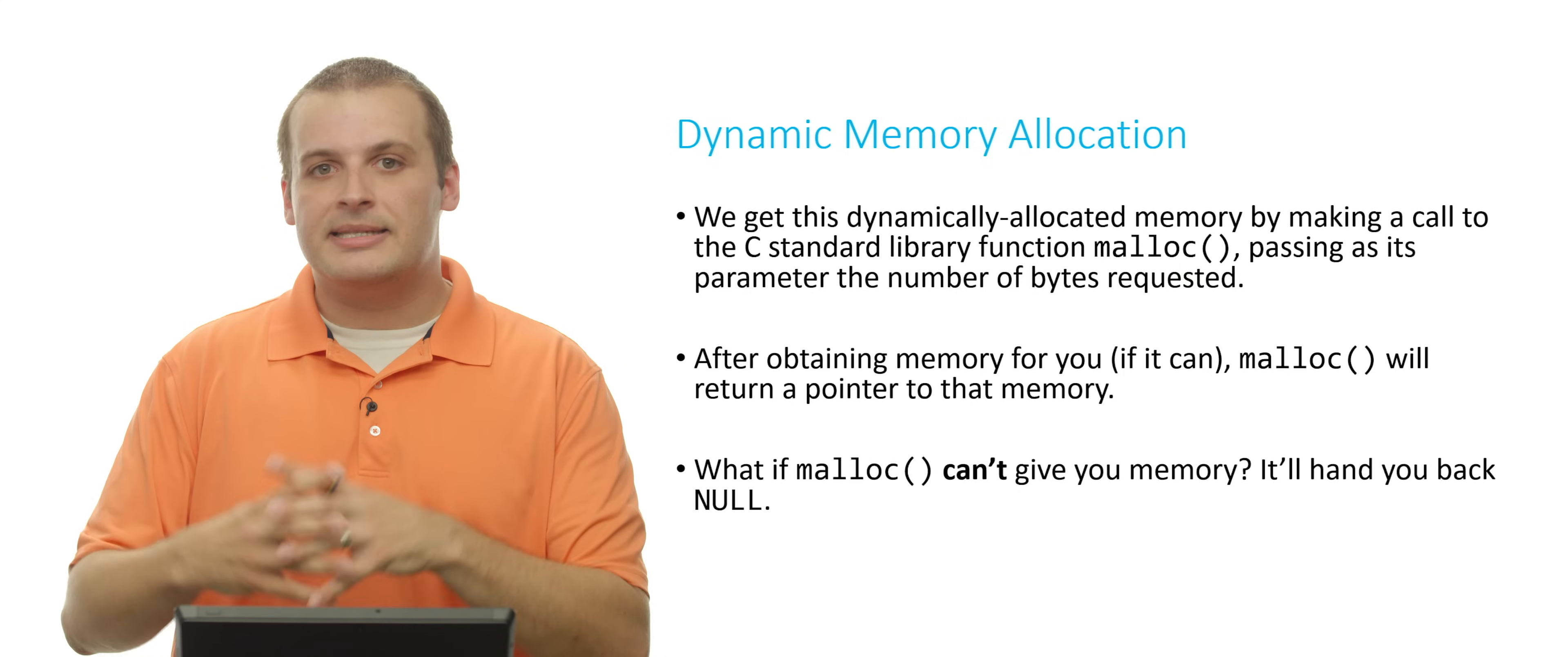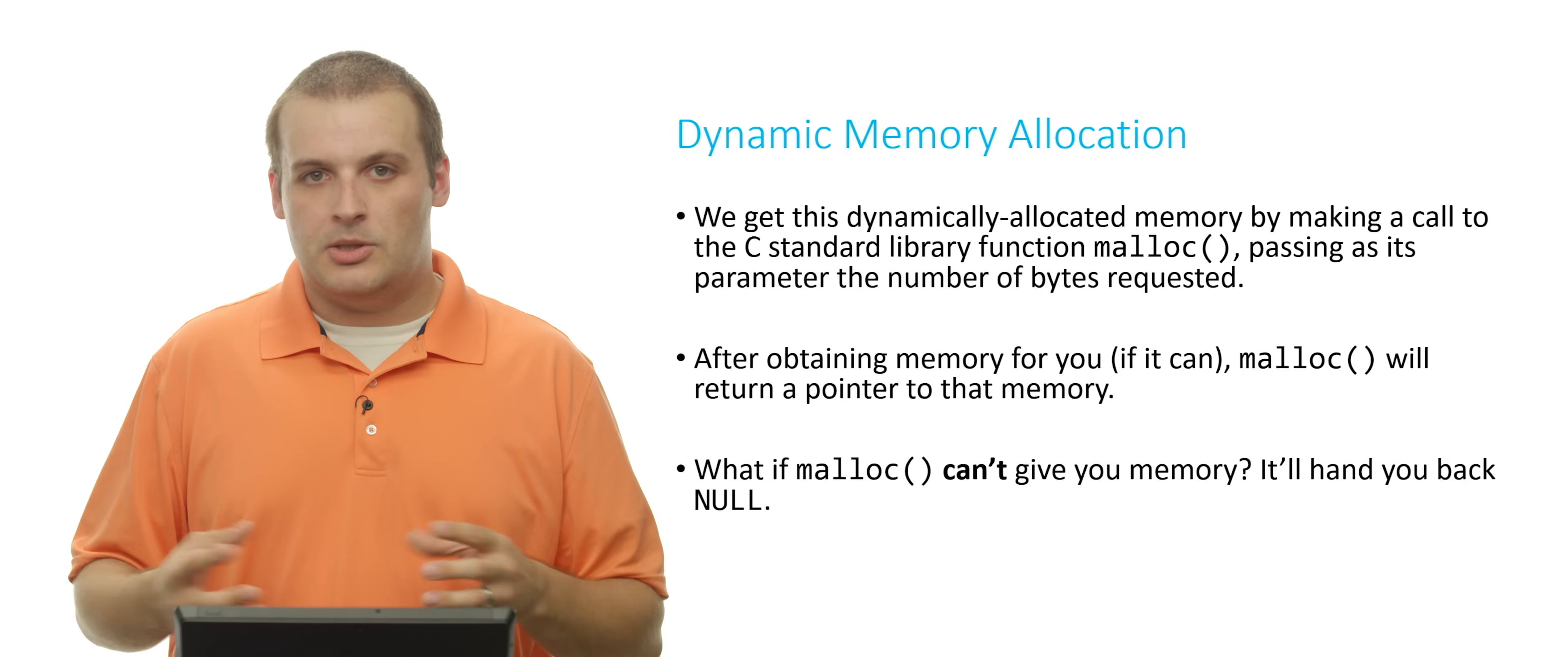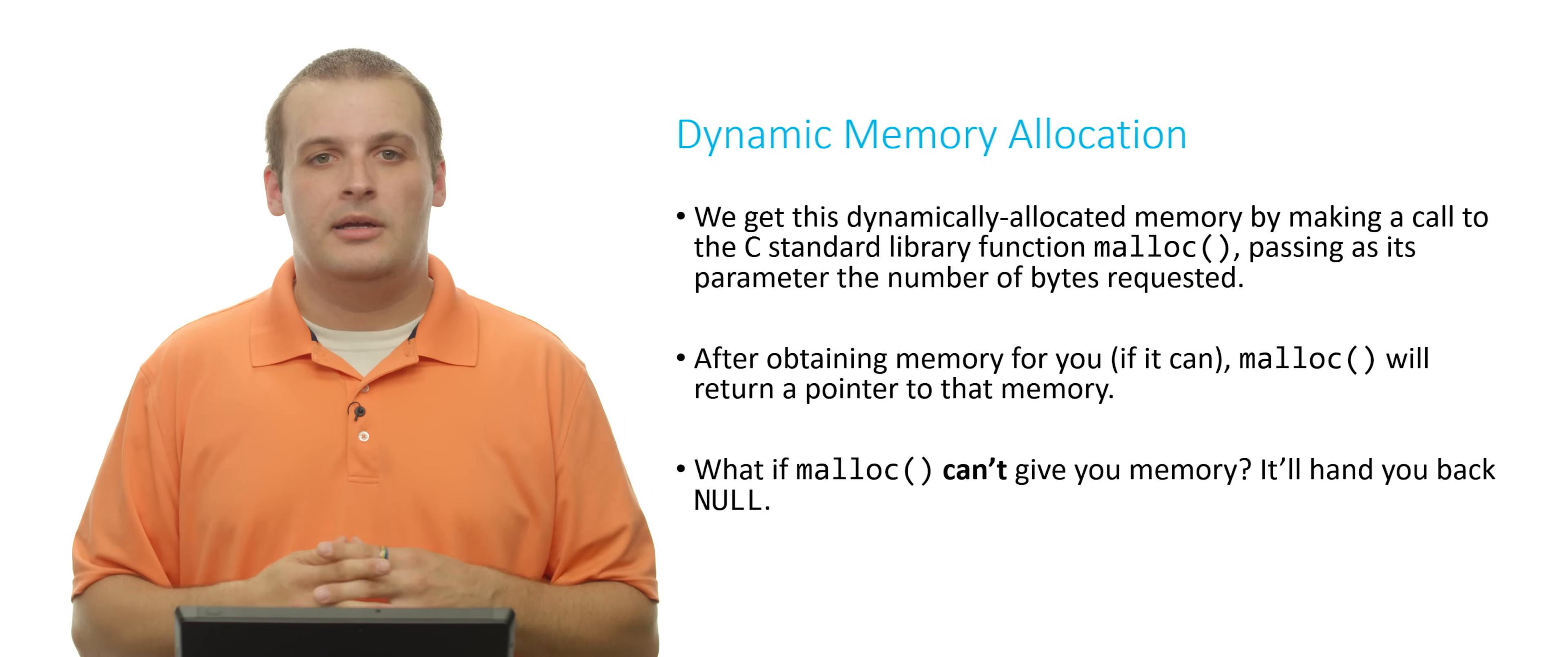What malloc will then try and do is find some chunk of memory the size that you asked for on the heap. So it'll go and try and find eight contiguous bytes of memory, for example, if we're allocating a double. It will go and try and find eight contiguous bytes of memory from the heap.